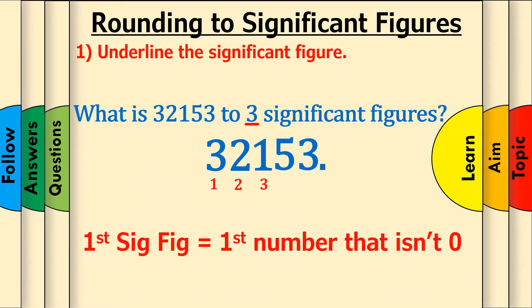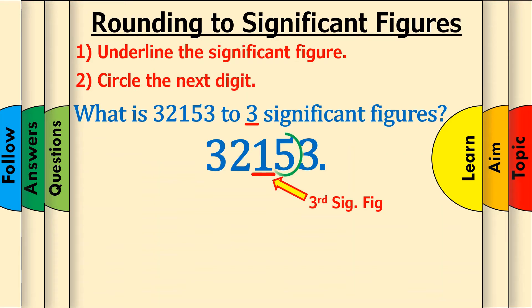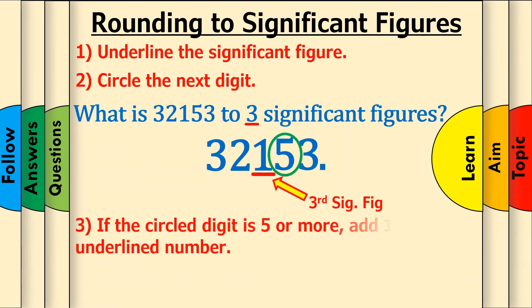Step 2: Circle the next digit, which is 5. Step 3: If the circled digit is 5 or more, add 1 to the underlined number. 5 is 5 or more, so add 1 more to 1, which gives 2.